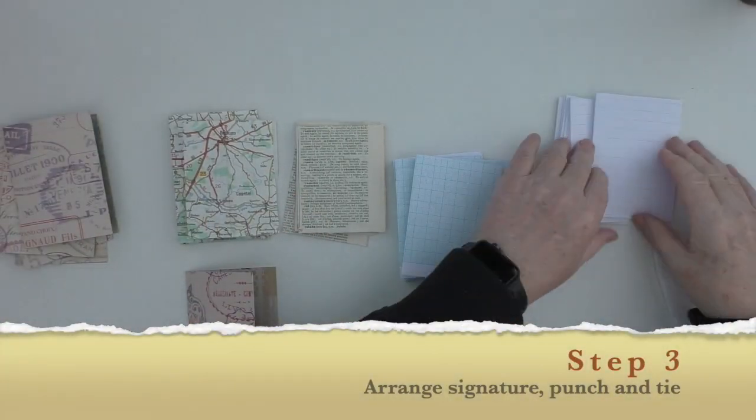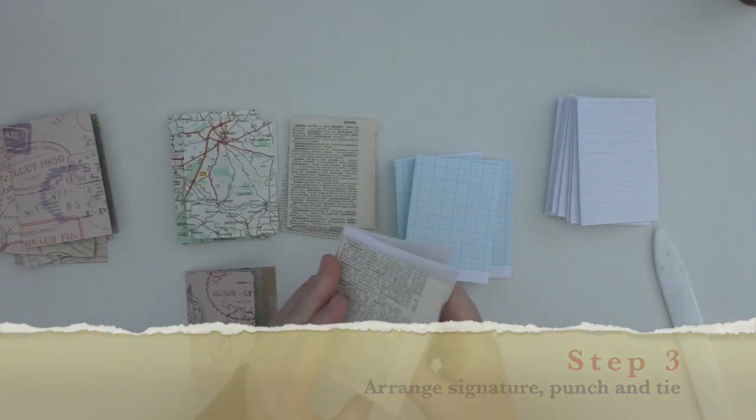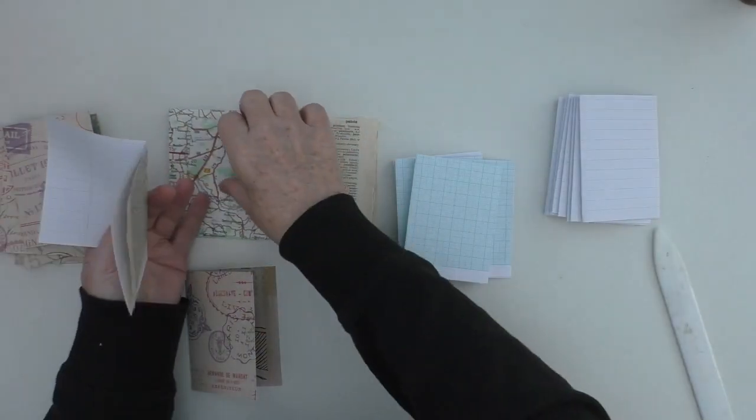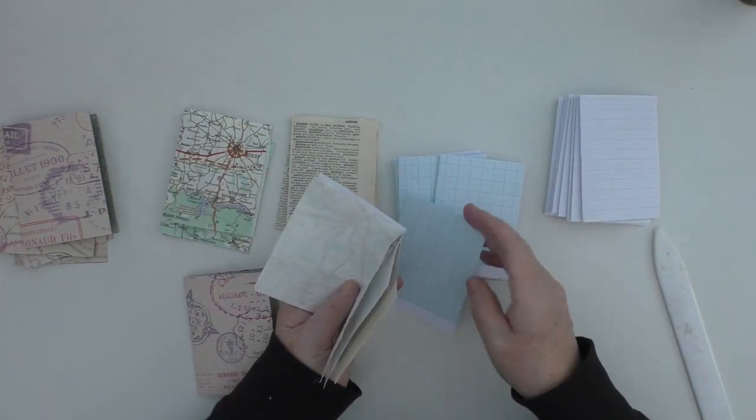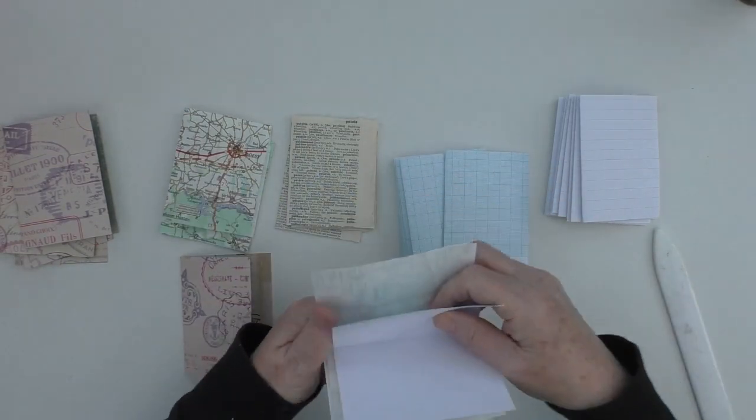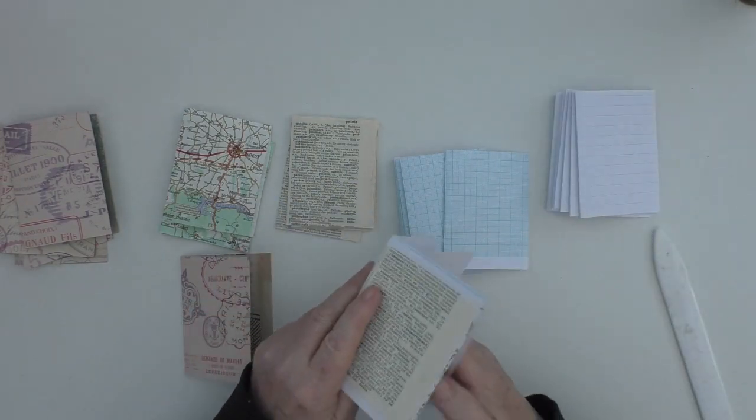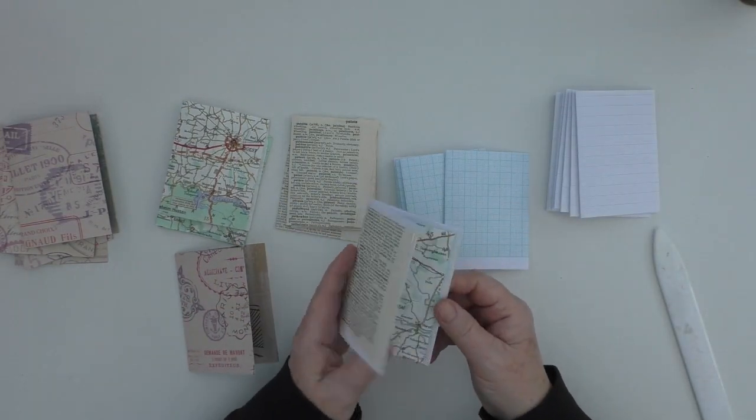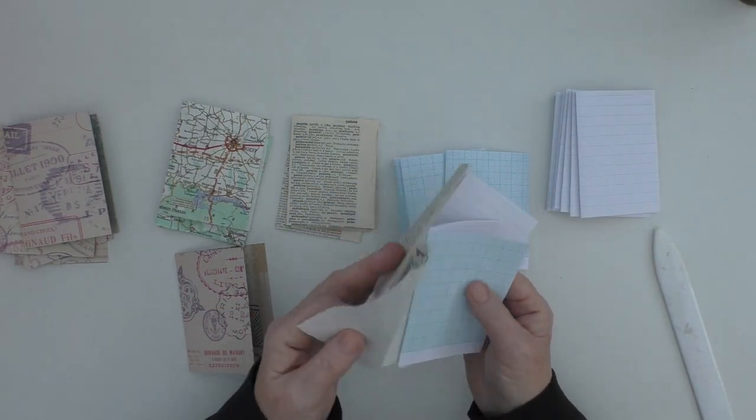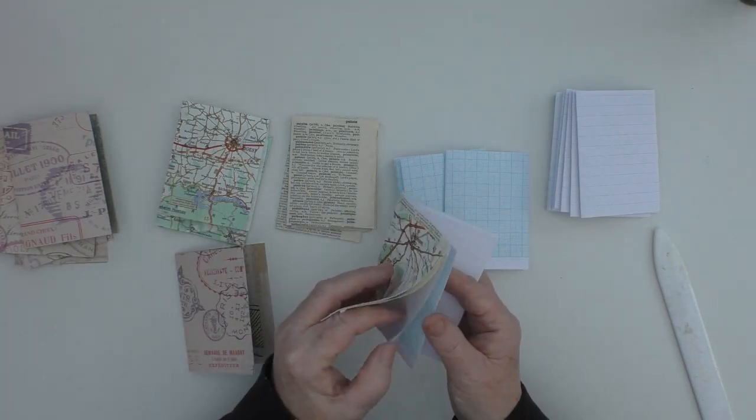For step three, I'm going to organize them into signatures, just putting in a variety of papers. Now you could put any sort of papers in these at all. You could use painted papers or you could just use one sort of notepaper. Anything at all. Just use what you have.